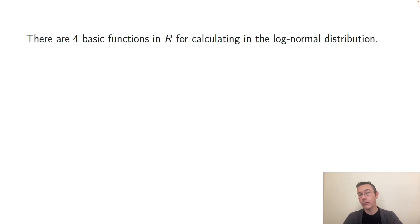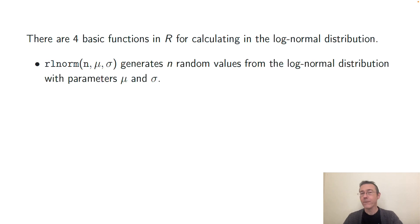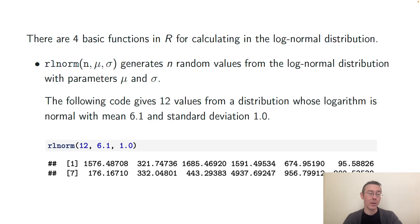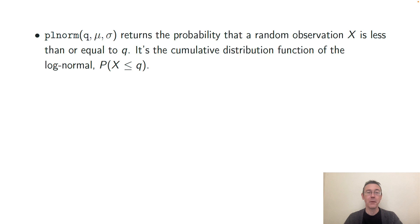There are four basic functions in R for calculating in the log-normal distribution. The first is rlnorm and that's used to generate random values. You need three parameters here: first the number of random values that you want, then the mean of the corresponding normal distribution, and then the standard deviation of the corresponding normal. Here's some code generating 12 random values from the log-normal distribution with parameters mu 6.1 and standard deviation 1.0.